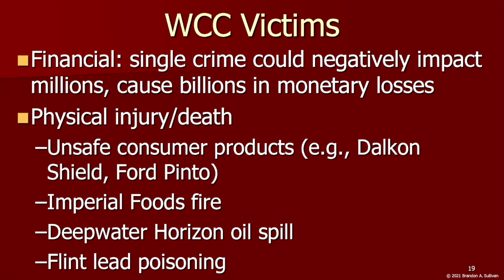Or when workers are placed in dangerous conditions, as with the Imperial Foods case, where 25 workers were killed and 56 more were injured when the plant they were working in caught fire and they were unable to escape because the doors had been locked to keep out flies. Or the lead poisoning of the residents of Flint, Michigan, making countless people sick and leaving a whole generation of children with potentially life-long irreversible brain damage. Or the explosion of the Deepwater Horizon, which killed 11 people and then dumped nearly 5 million barrels of oil into the Gulf of Mexico, severely damaging the local ecosystem. There is much that remains unknown about the true extent of the impacts and costs of white-collar crime.